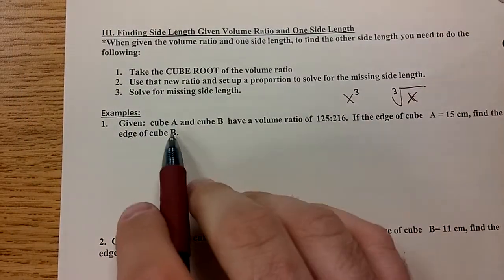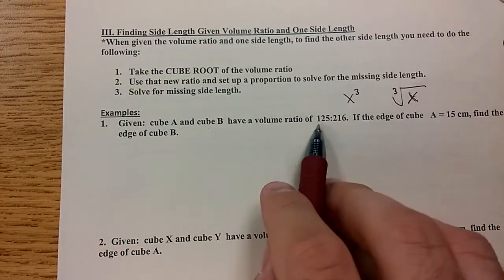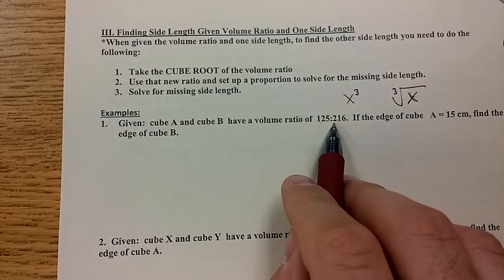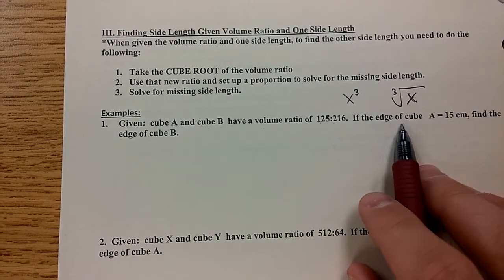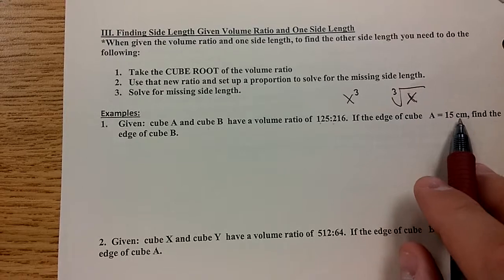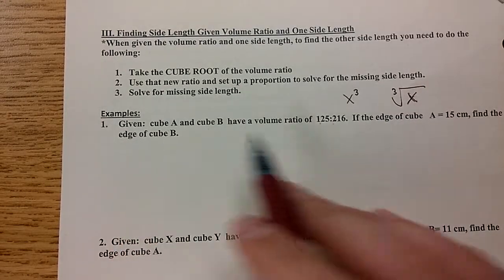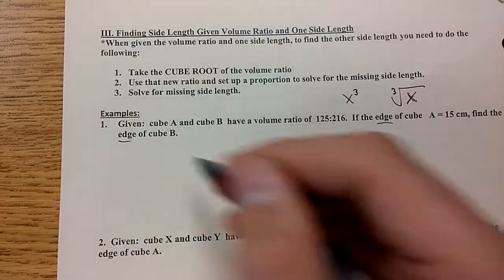So let's look at example 1 here. Given cube A and cube B have a volume ratio of 125 to 216, if the edge of cube A is 15 centimeters, find the edge of cube B. So edge for a 3D figure means length. So you're finding a length here.